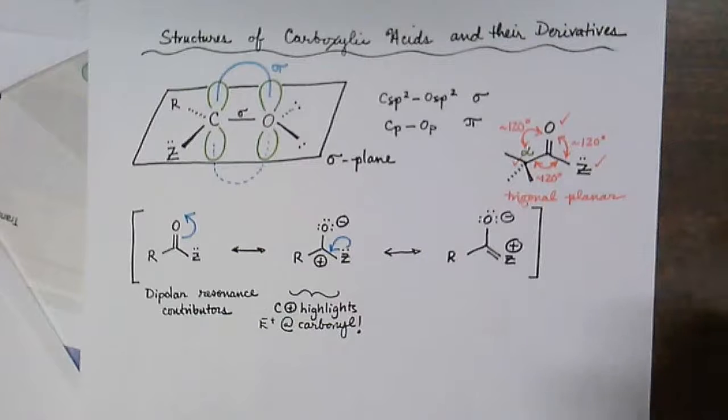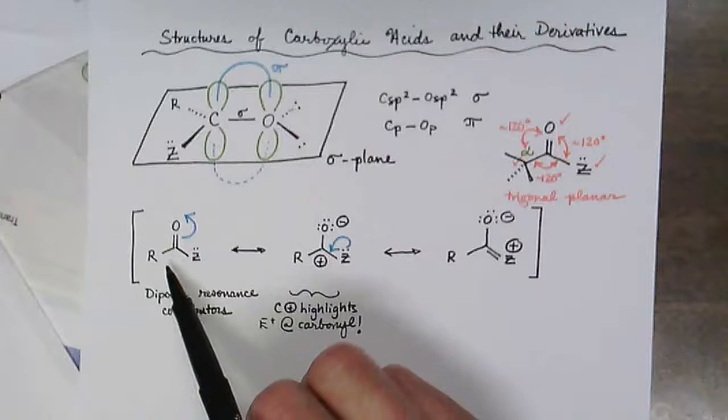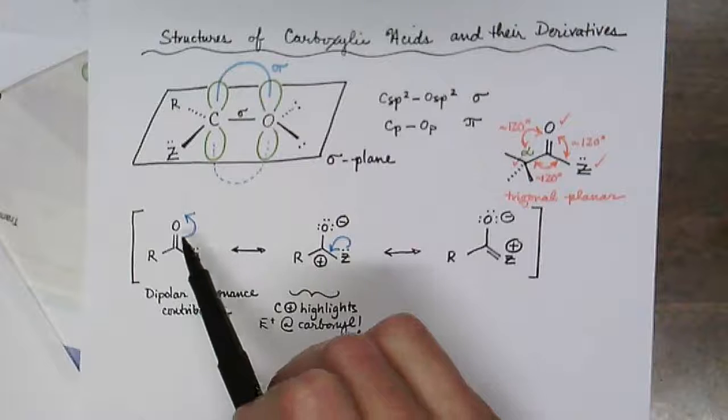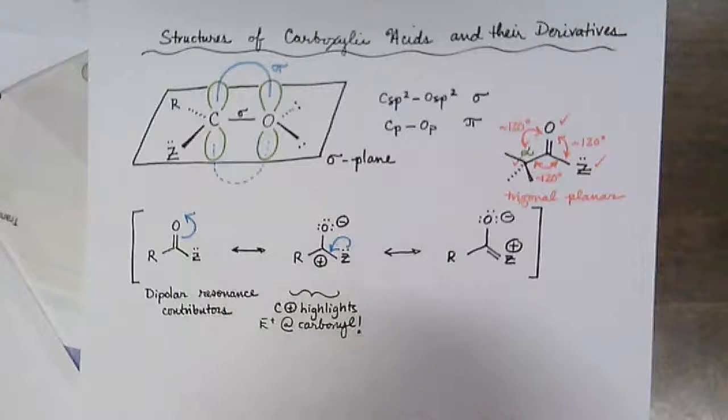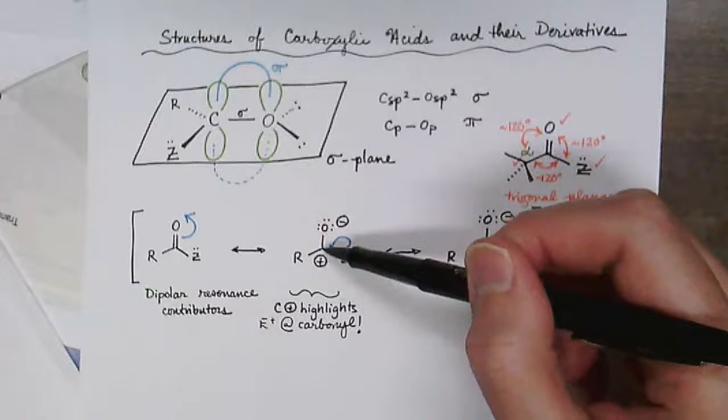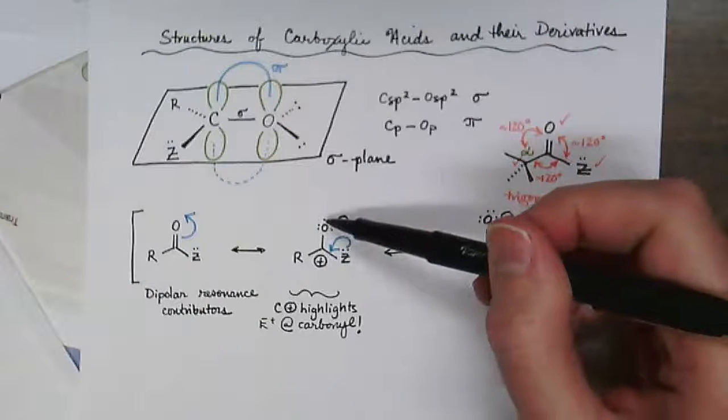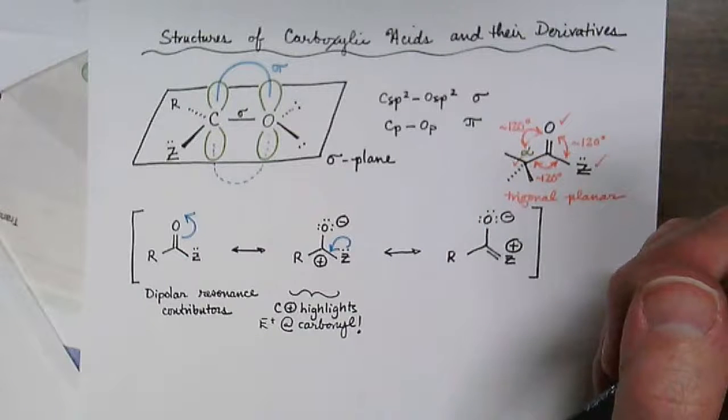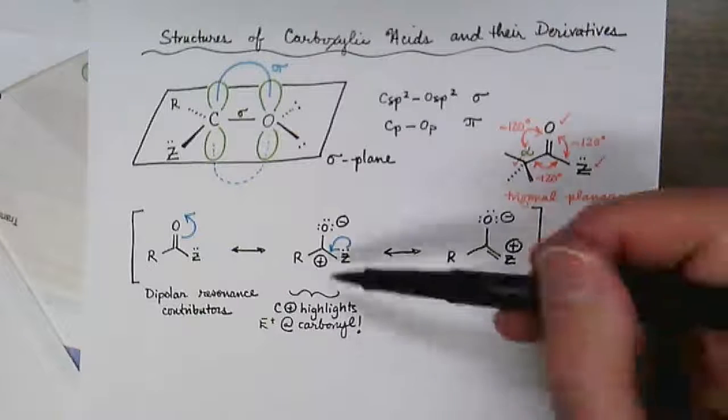We can also discuss the carboxylic acid and the derivatives' dipolar resonance structures. In the first instance, we can take the pi electrons of the carbonyl and move them up to be a lone pair of electrons on oxygen. This first resonance contributor highlights the fact that we can place a formal positive charge at the carbonyl carbon and a negative formal charge at the oxygen of the carbonyl. This highlights the reactivity at the carbon, namely the fact that this carbon atom is electrophilic.